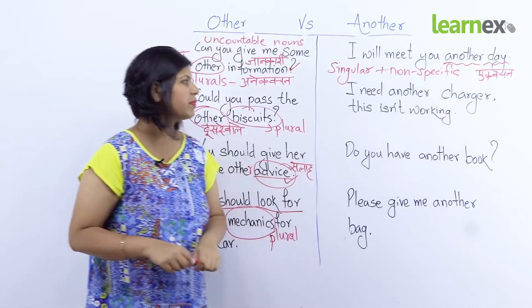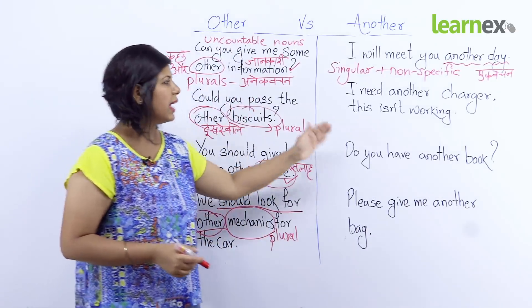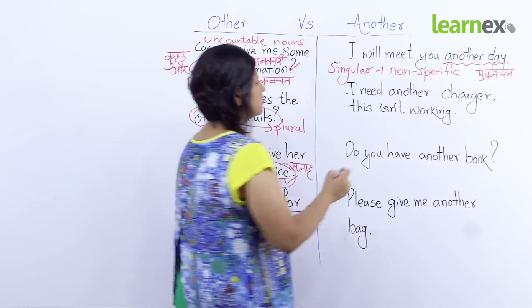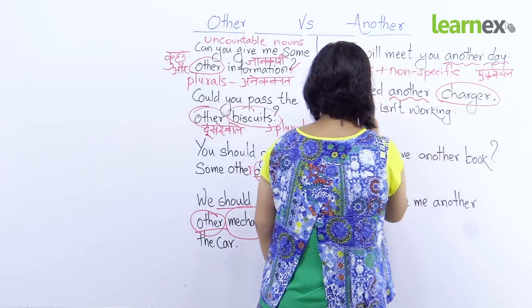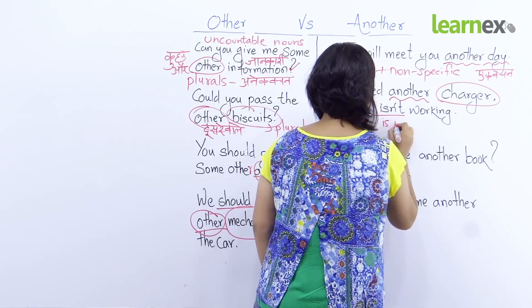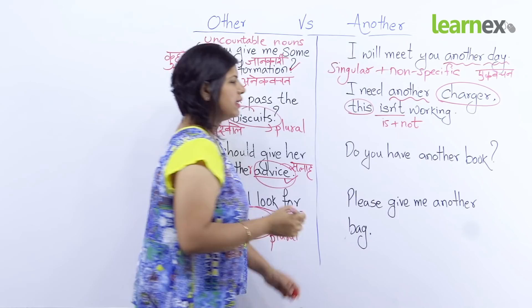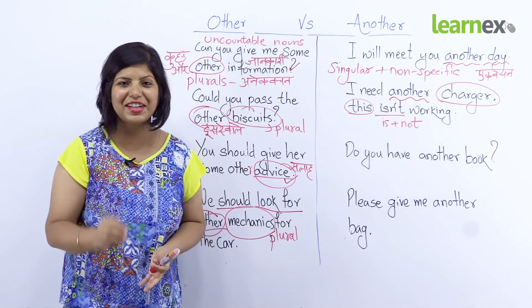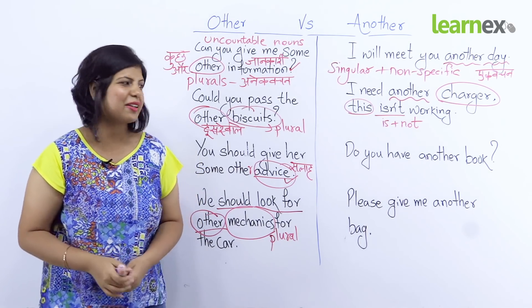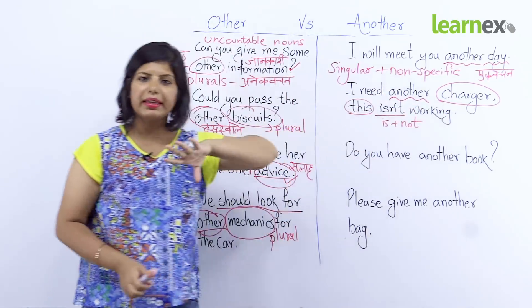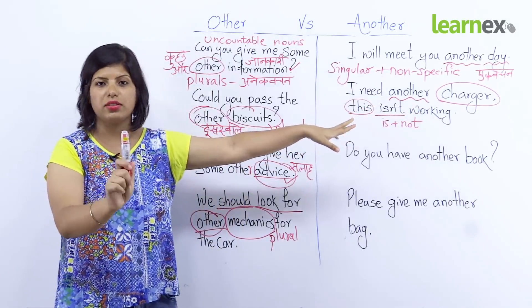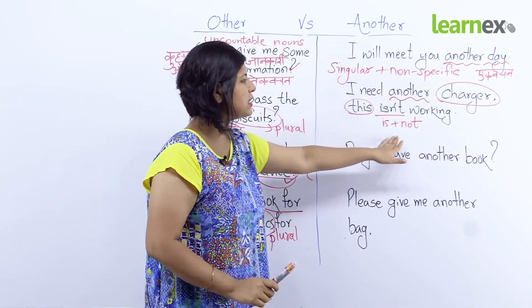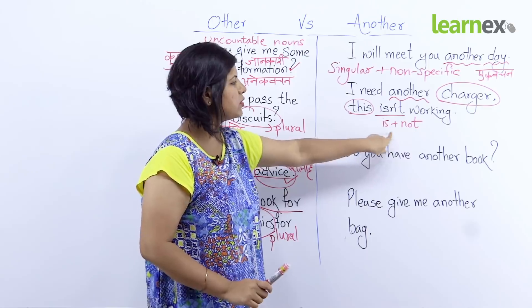Next example: 'I need another charger, this isn't working.' Iska matlab hai mujhe kisi aur charger ki zarurat hai, yeh wala kaam nahi kar raha. 'I need another charger' — ab charger mein keh rahi hun koi bhi aur charger, non-specific, koi particular charger nahi — bas ek charger jo kaam kar raha ho. Aur yehaan pe 'charger' singular hai — ek charger. By the way, 'isn't' means 'is not'.